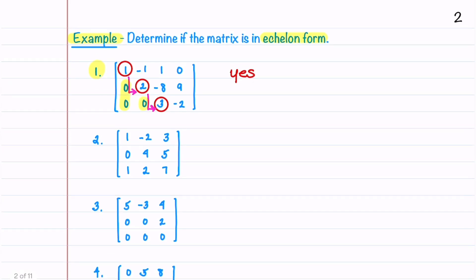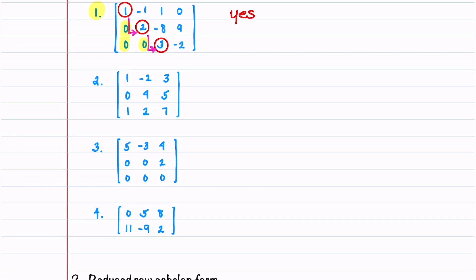You might want to stop the video and do these next three on your own. Our second matrix also has no rows of zero, so we'll begin by circling the leading entries. You can see that our leading entries are not down and to the right, so this matrix is not in echelon form. Let's look at our third matrix. This matrix does have a row of zeros at the bottom, so that first property is satisfied. Let's now circle the leading entries — these leading entries are down and to the right, so this matrix is in echelon form.